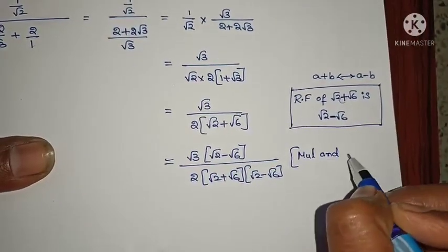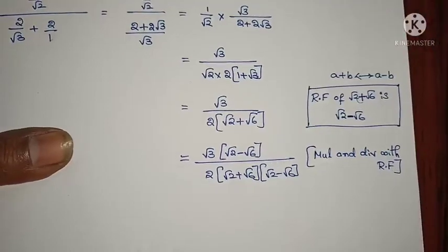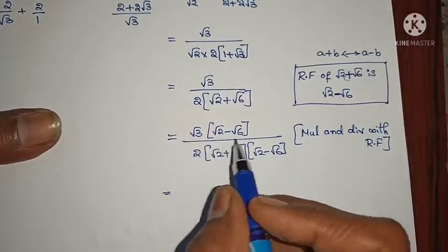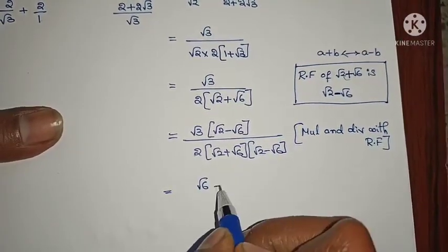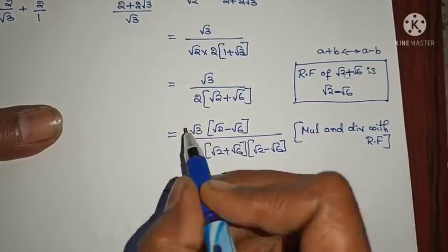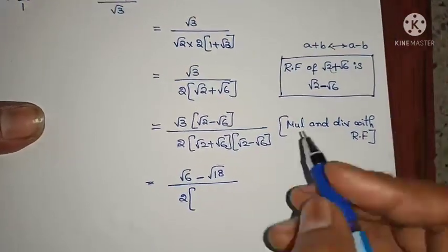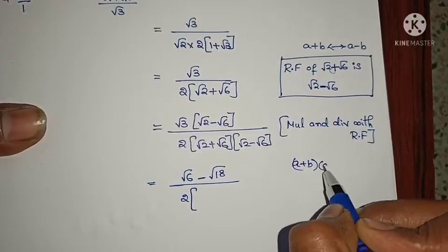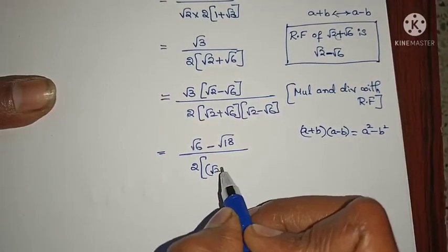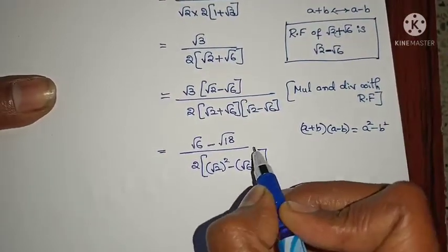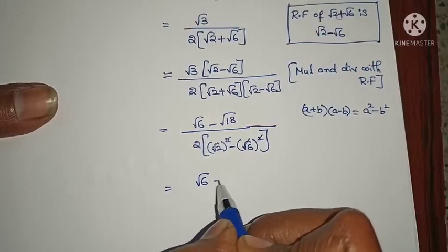Multiply and divide with RF, which is √2 − √6. So √3 × √2 = √6, and √3 × √6 = √18. Divided by 2 into — the denominator is in the form (A + B)(A − B) = A² − B², giving (√2)² − (√6)² = 2 − 6 = −4. So we have √6 − √18 over 2 × (−4).